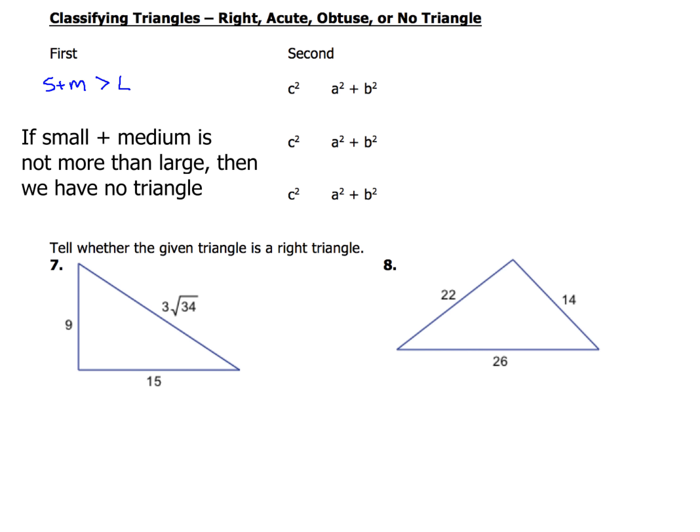Then we move on to the second step and figure out how to classify it as right, acute or obtuse. If small and medium is not more than large, we're done. We don't have enough, our side lengths are not enough to give us a triangle, so we don't even have a triangle. We don't have to do any of this Pythagorean theorem business.